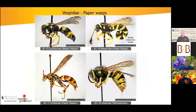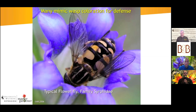Things like paper wasps and yellow jackets will visit some flowers, but mason wasps and pollen wasps in the family Vespidae are good pollinators. Pollen wasps have a really unique structure on the ends of their antennae that helps identify them. Many other insects that visit flowers mimic wasp coloration for protection — a bird that's been stung by a yellow jacket will hesitate before grabbing an insect with similar coloring. This is called mimicry.